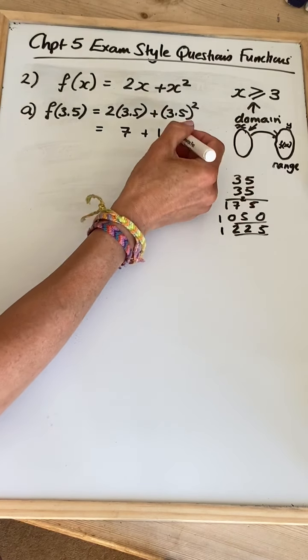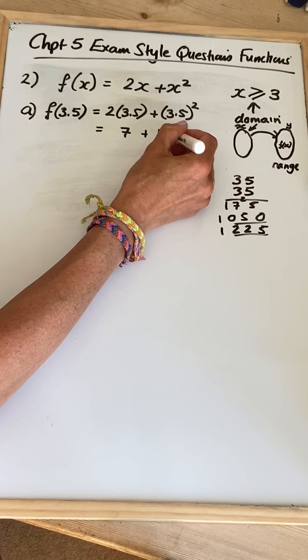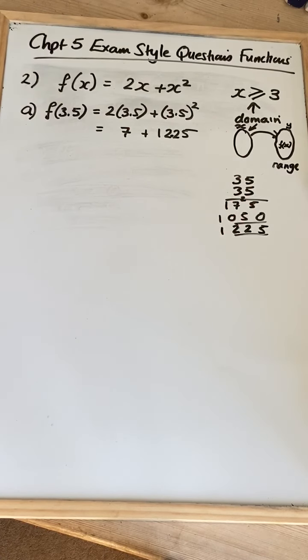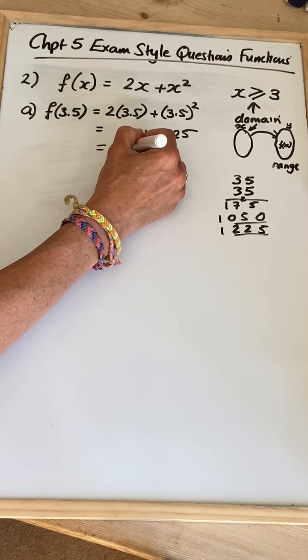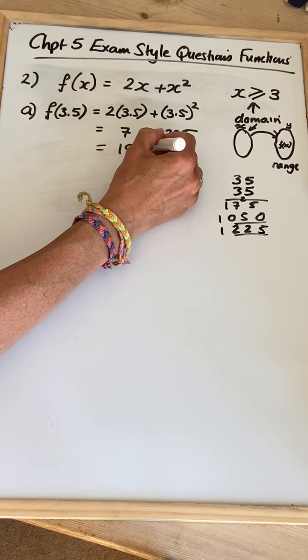Because it's 3.5, that's going to be 12.25. So I've got 7 plus 12.25, which is 19.25.